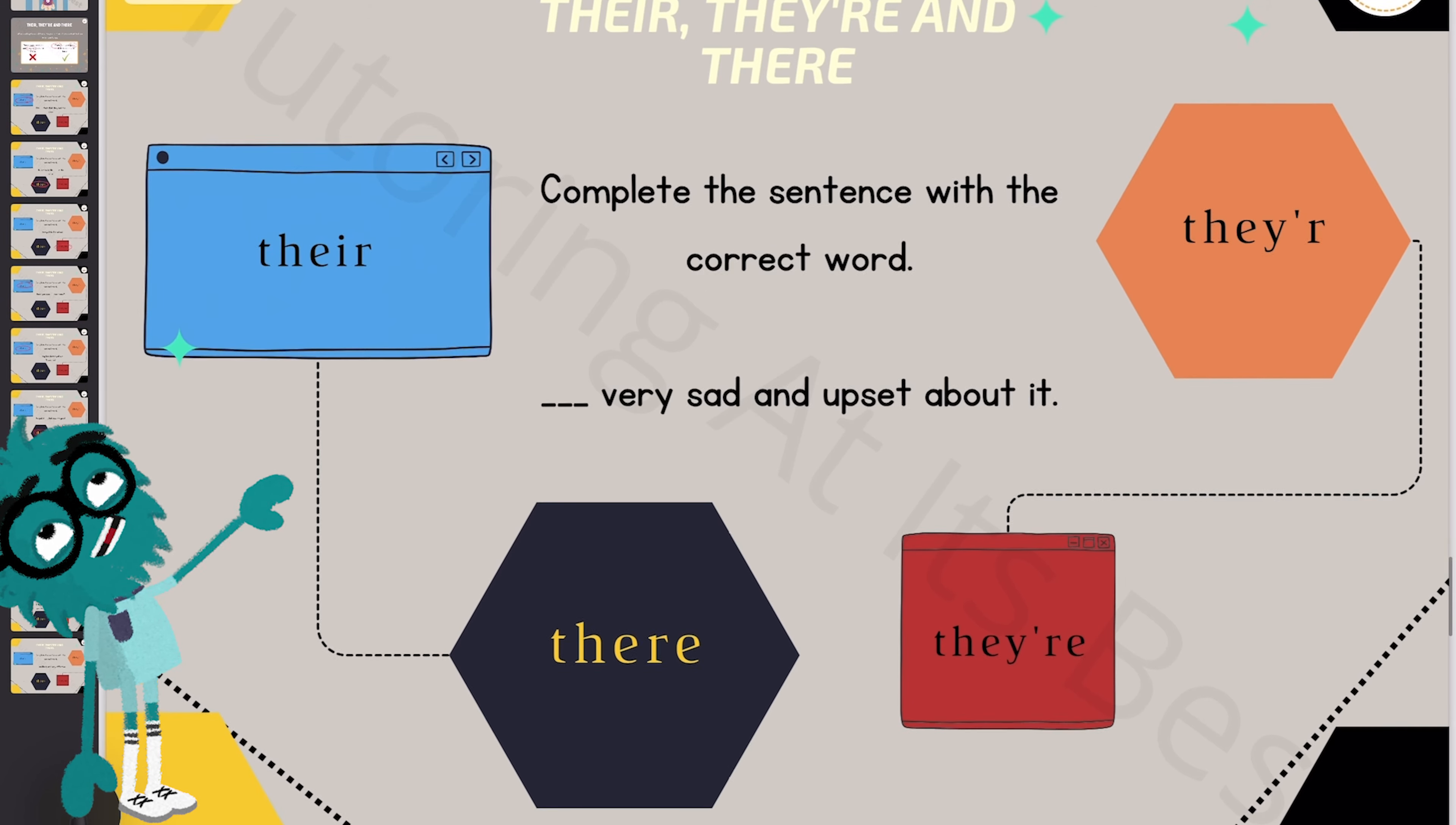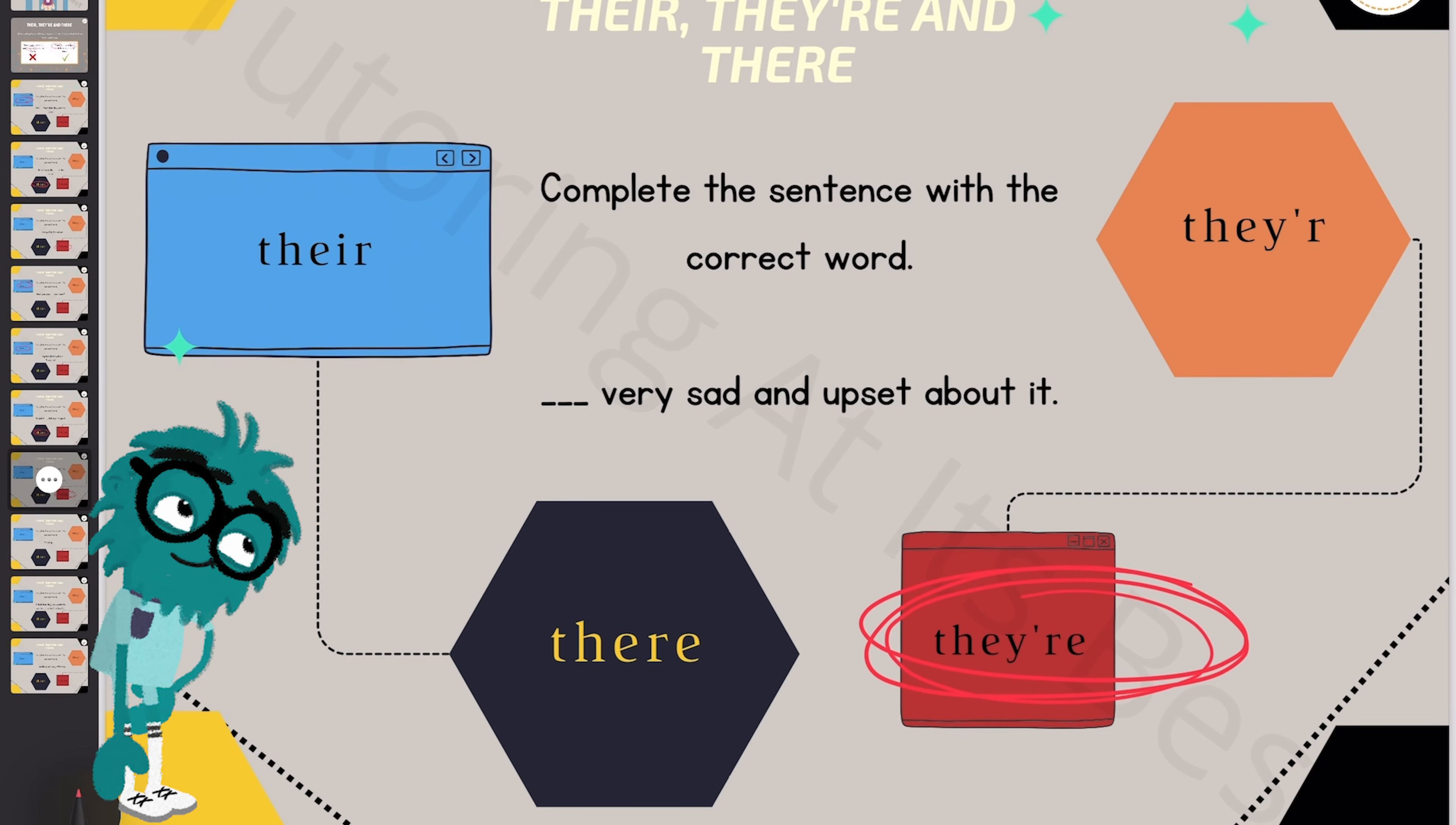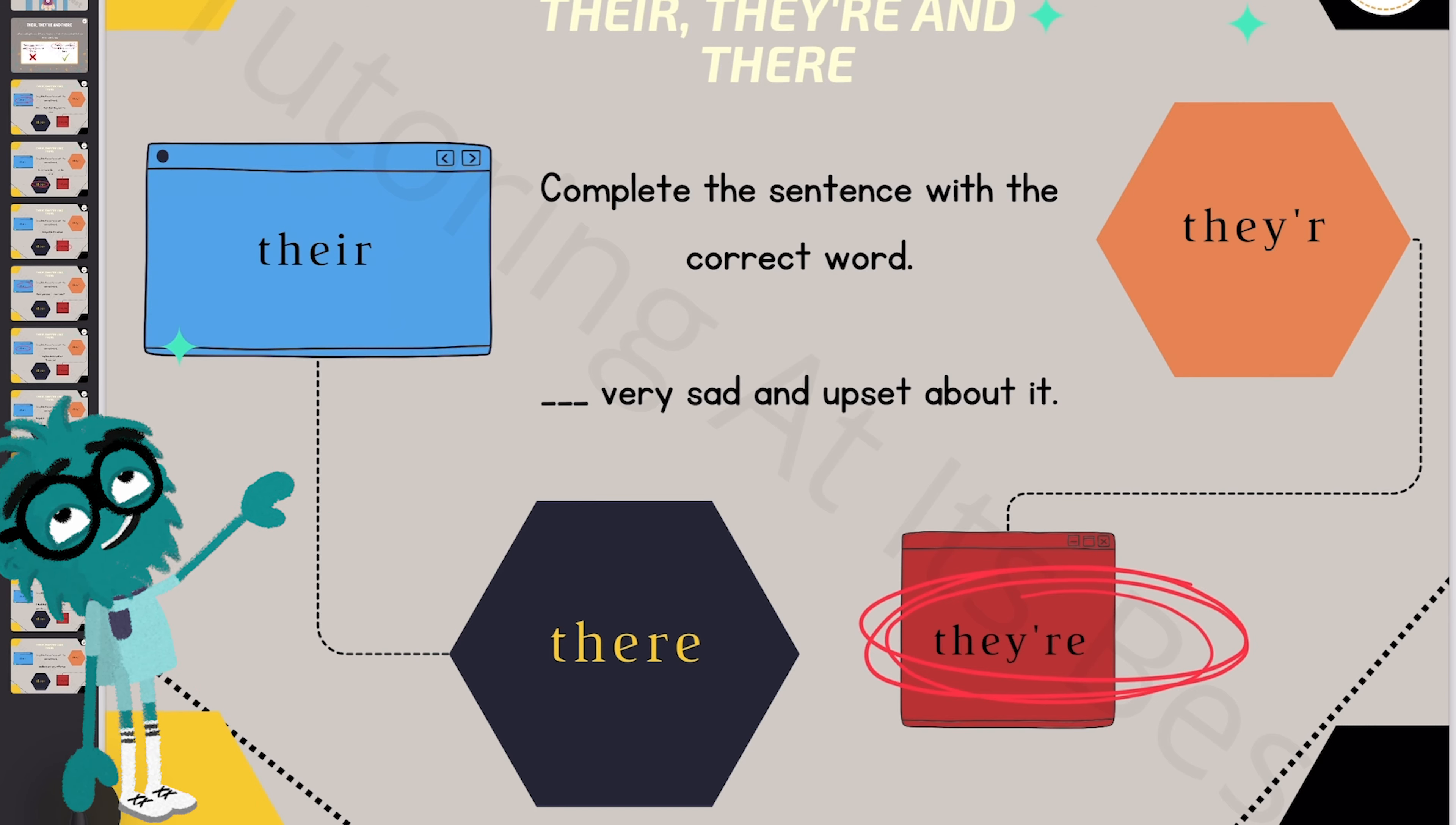However, for the next question, they're very sad and upset about it. So we would say they are very sad and upset about it. So that's a contraction.